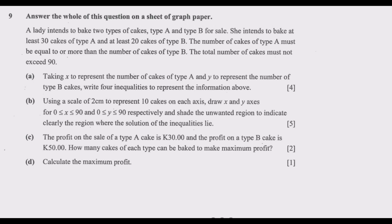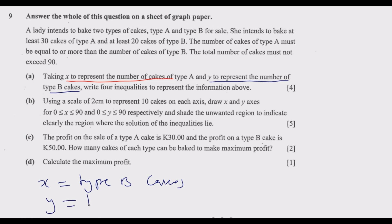Let us start with Question A — it is very important. When you get it right, everything becomes straightforward; if you mess up Question A, then everything will be messed up. So: X represents the number of type A cakes, and Y represents the number of type B cakes. Now we know what X and Y are.